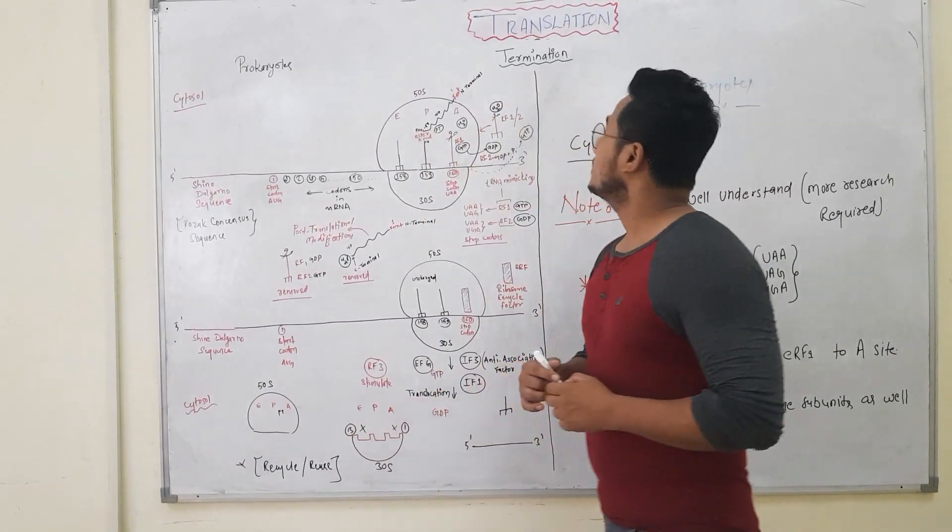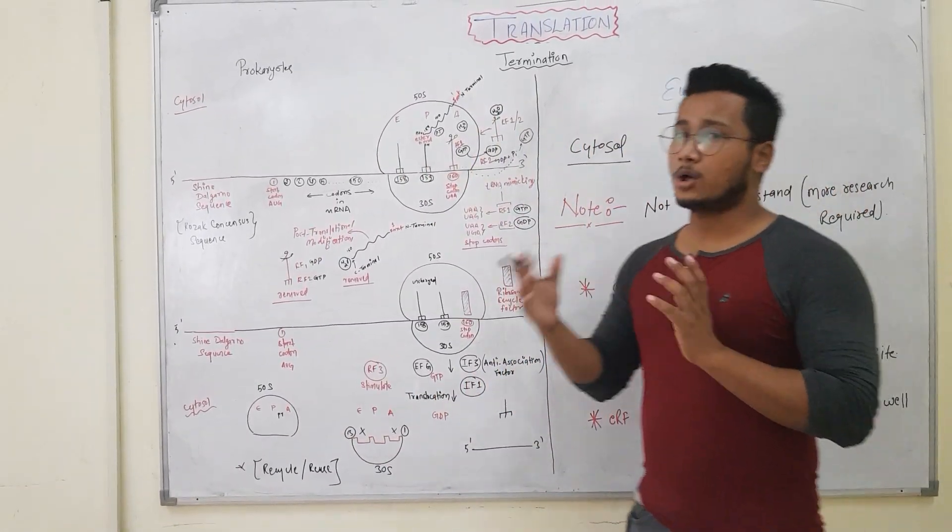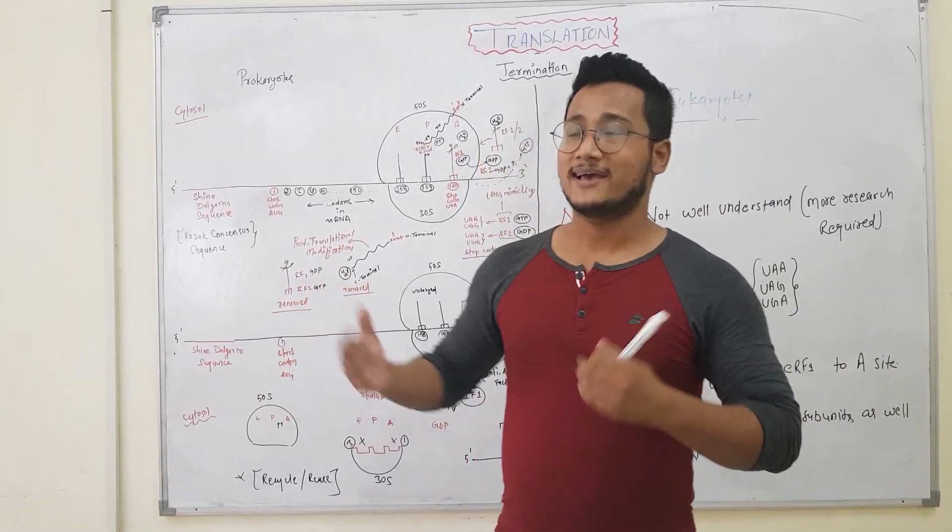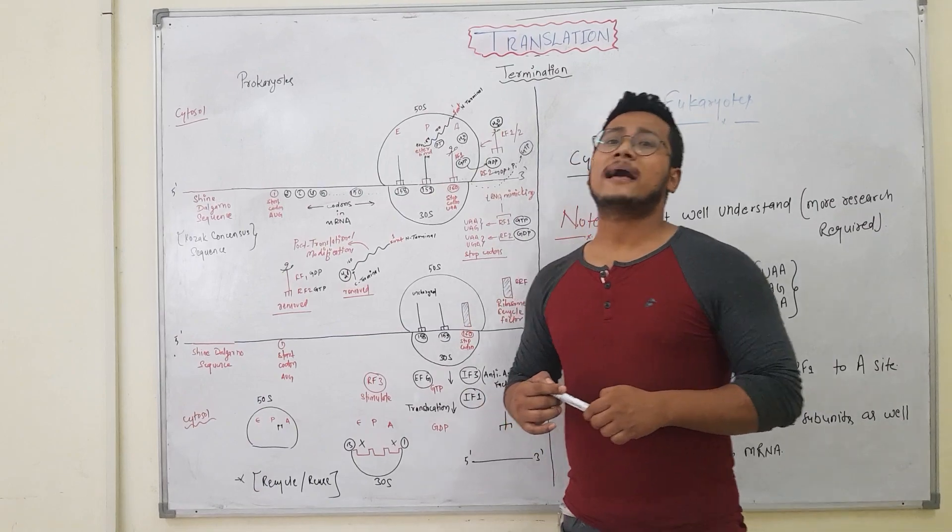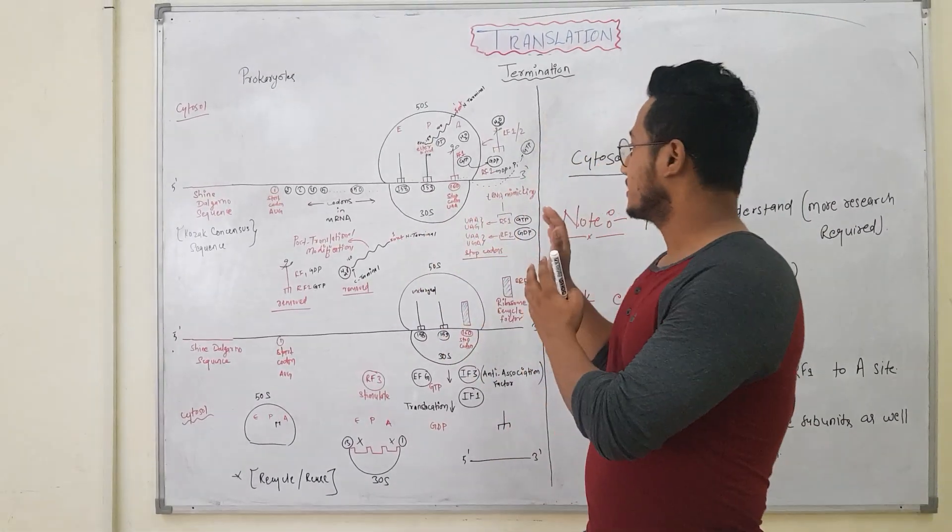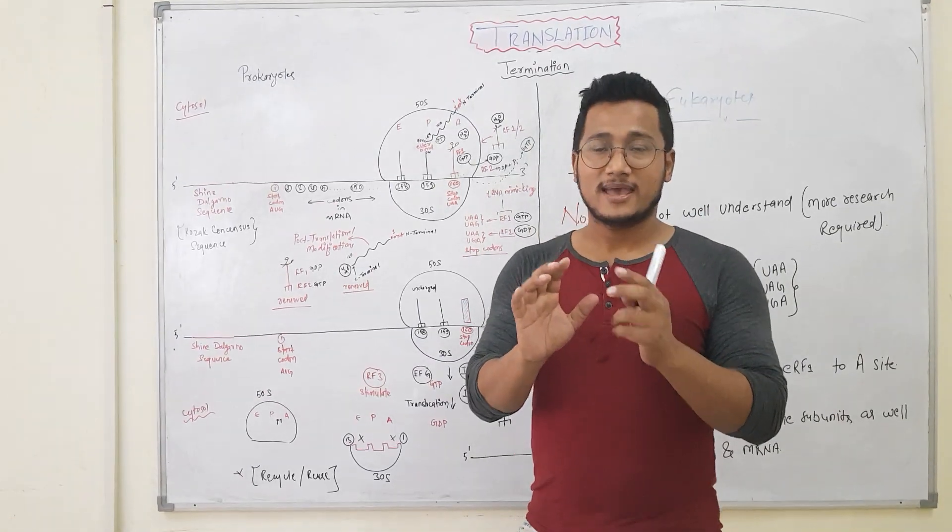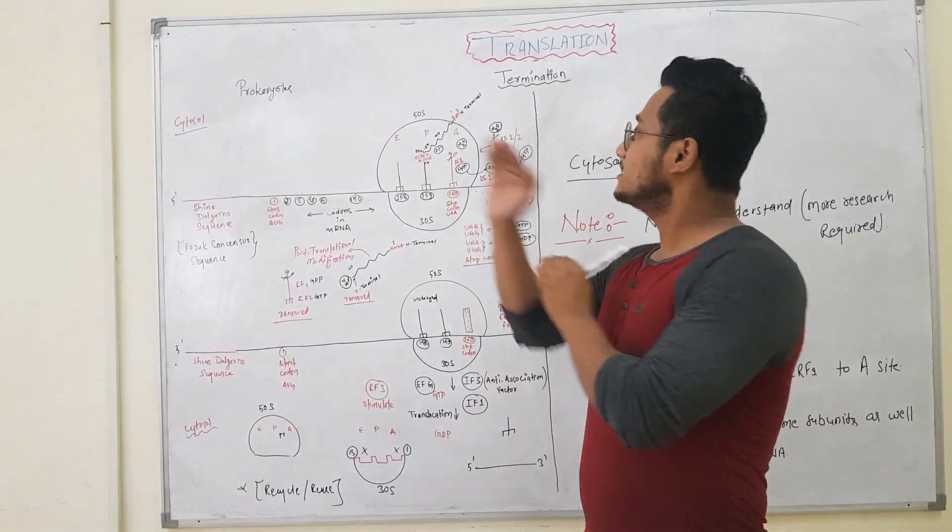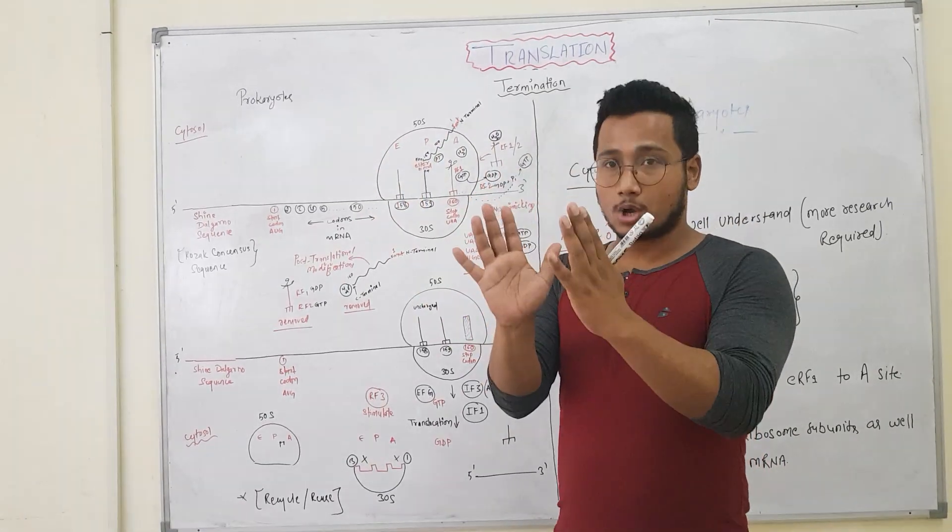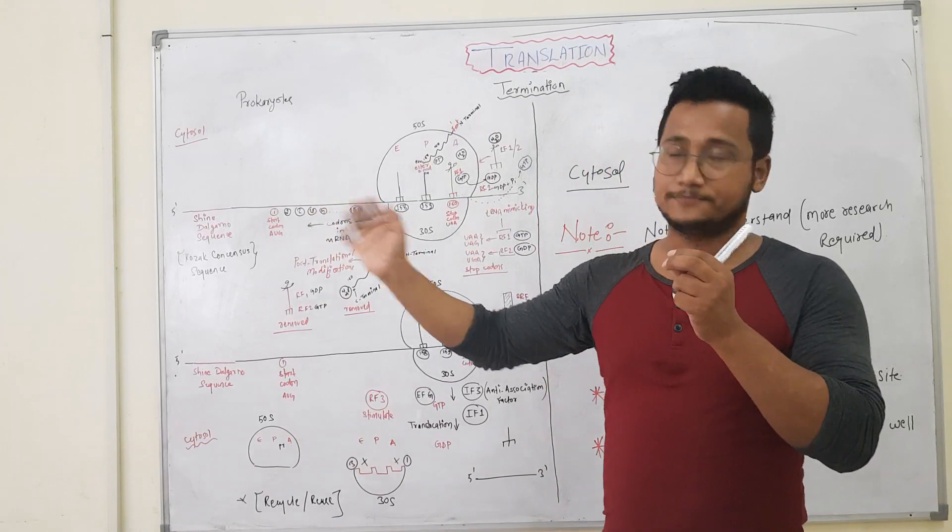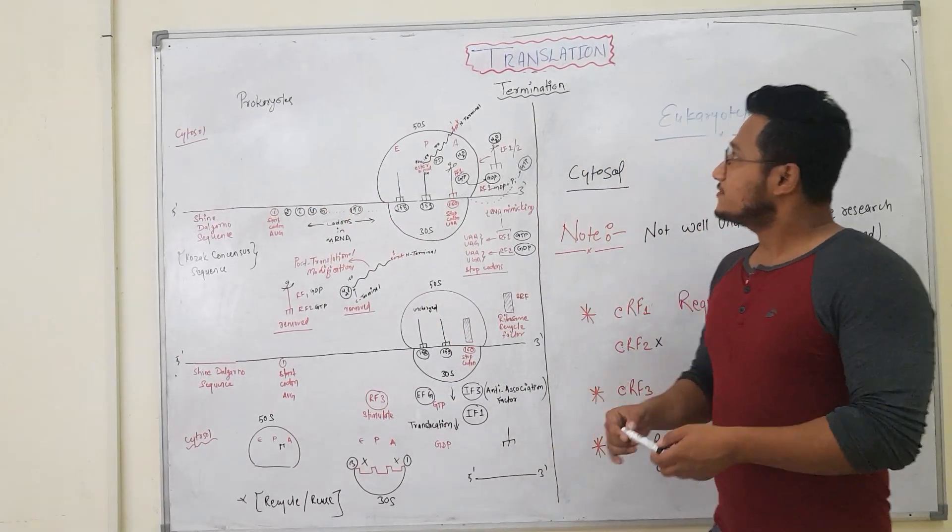In the previous study, we discussed the elongation and how the mechanism of elongation takes place. But ultimately what happens is that the ribosome encounters somewhere in the mRNA the stop codon, and that stop codon signals the ribosome to stop elongating or producing a long chain of peptides.